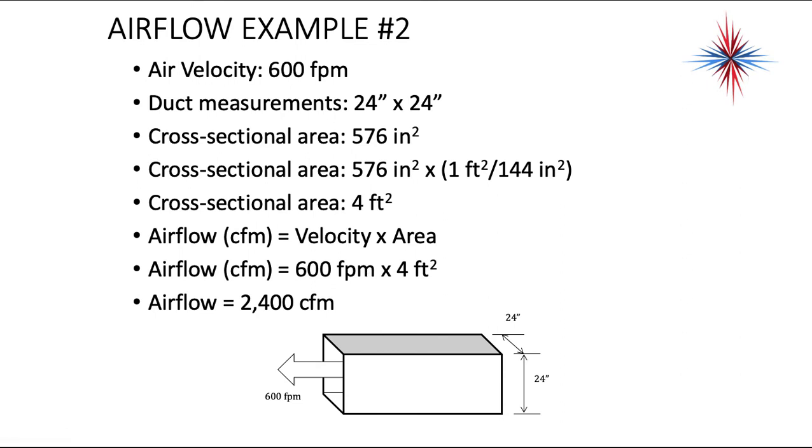So here we have another example. We know our velocity is 600 feet per minute because we have measured that. Our duct measurement is 24 by 24.